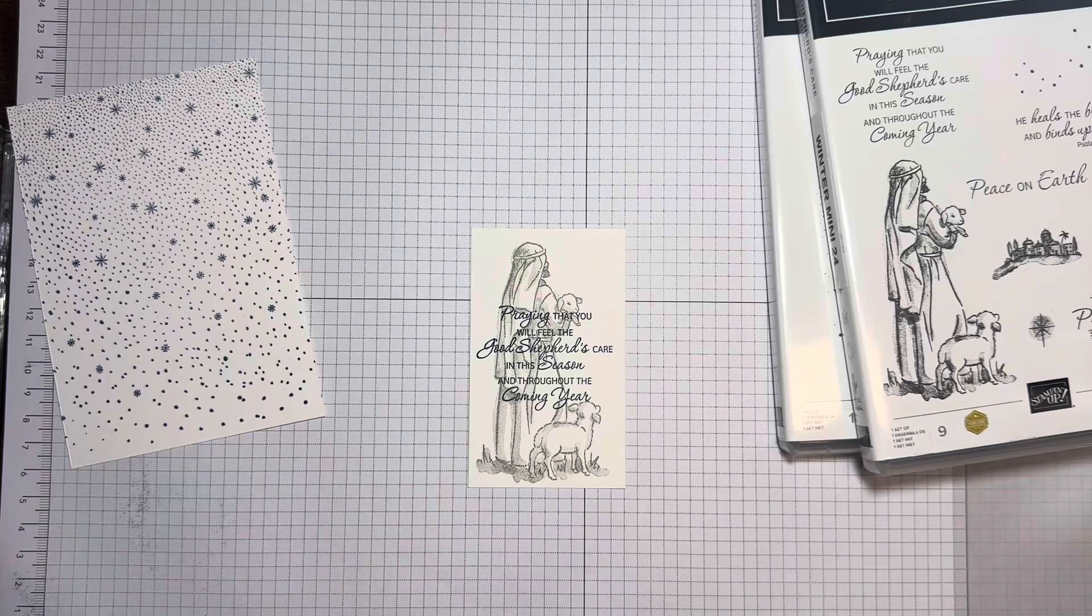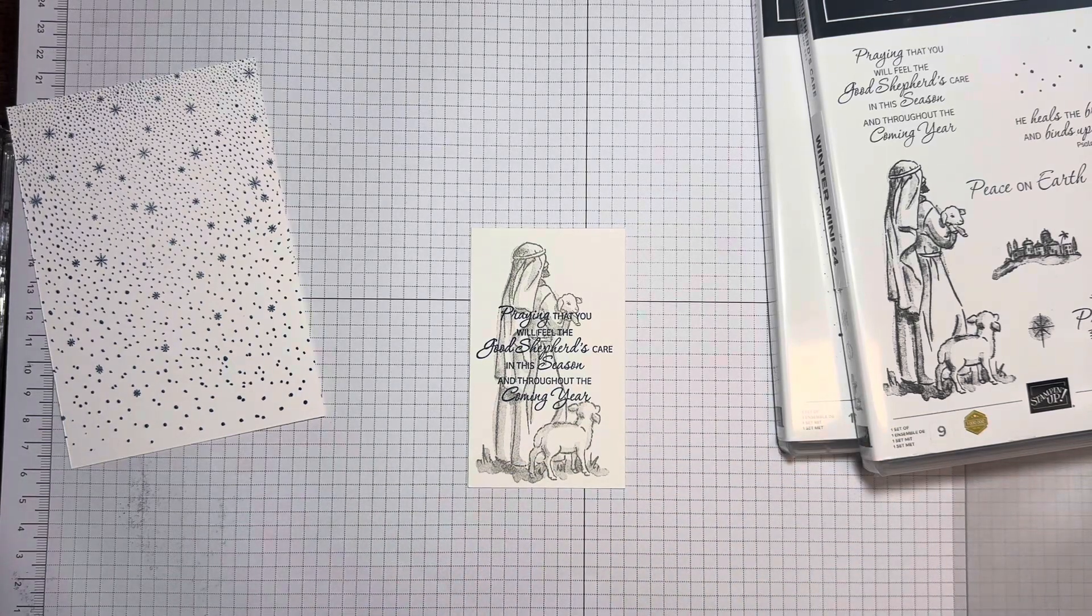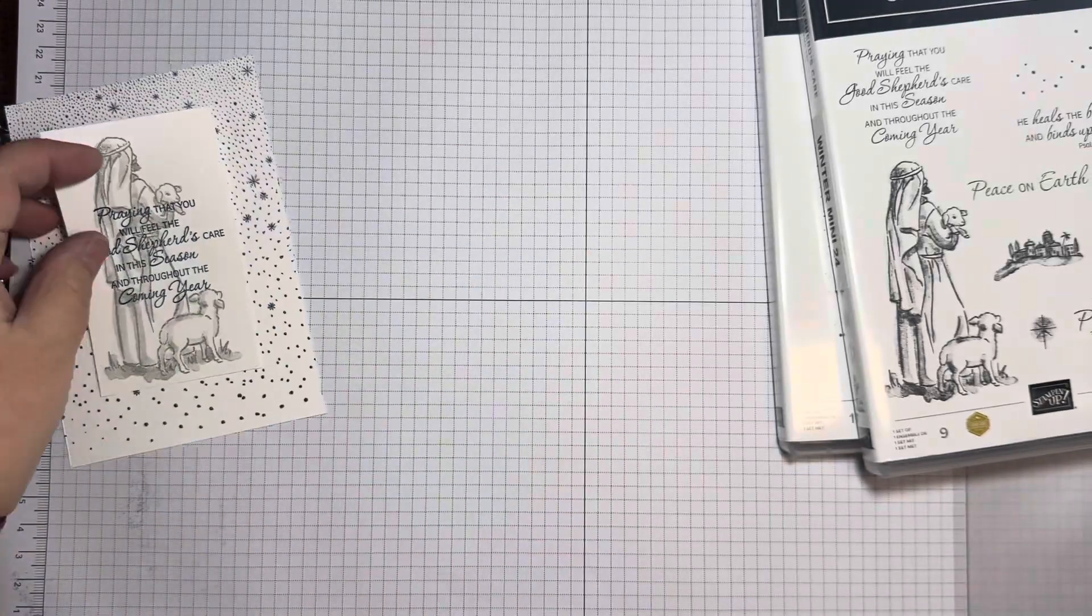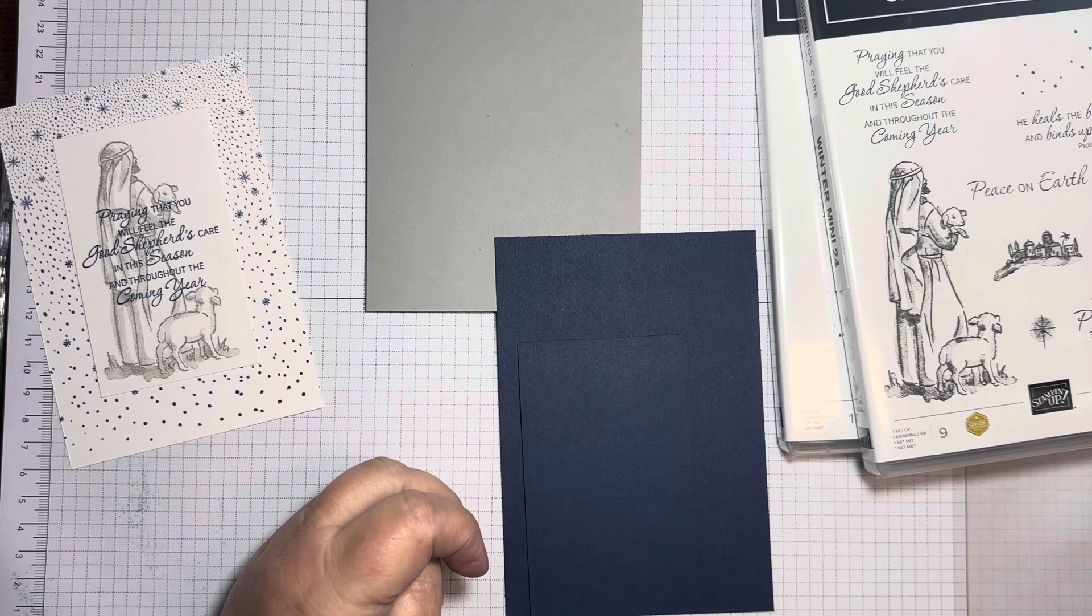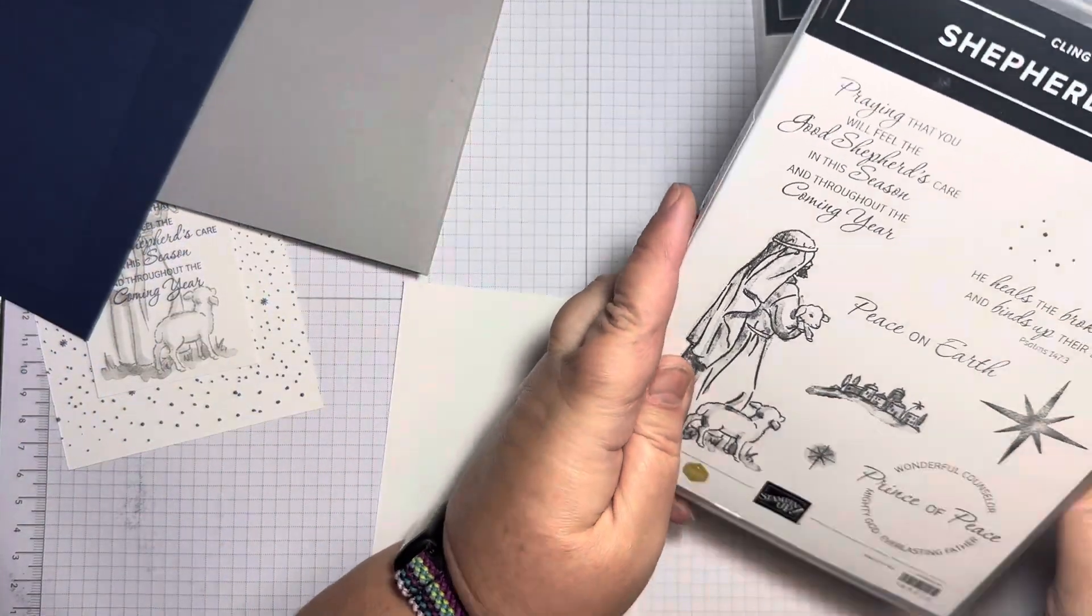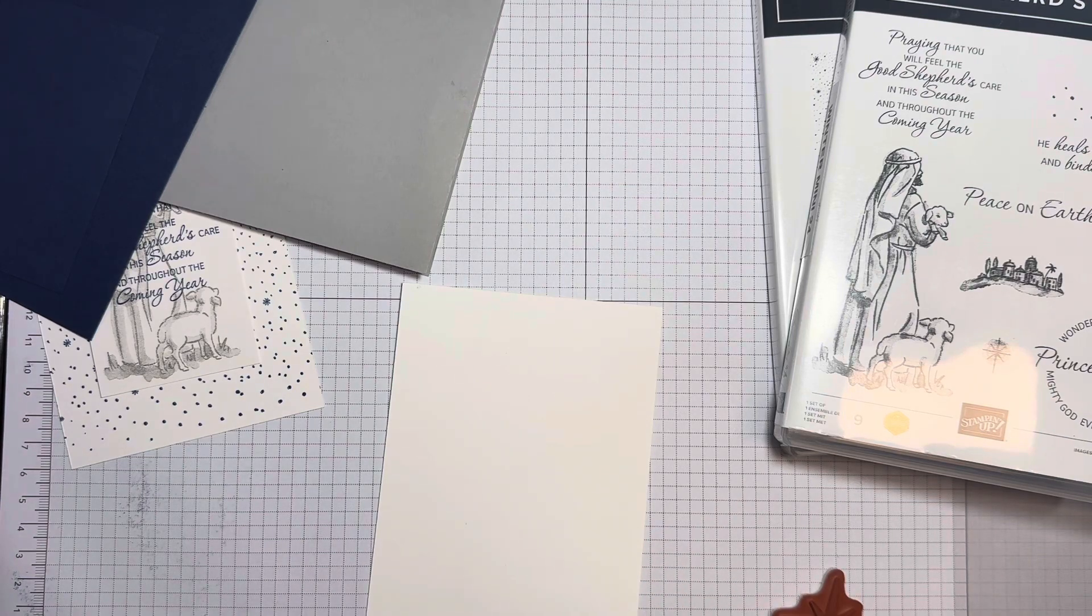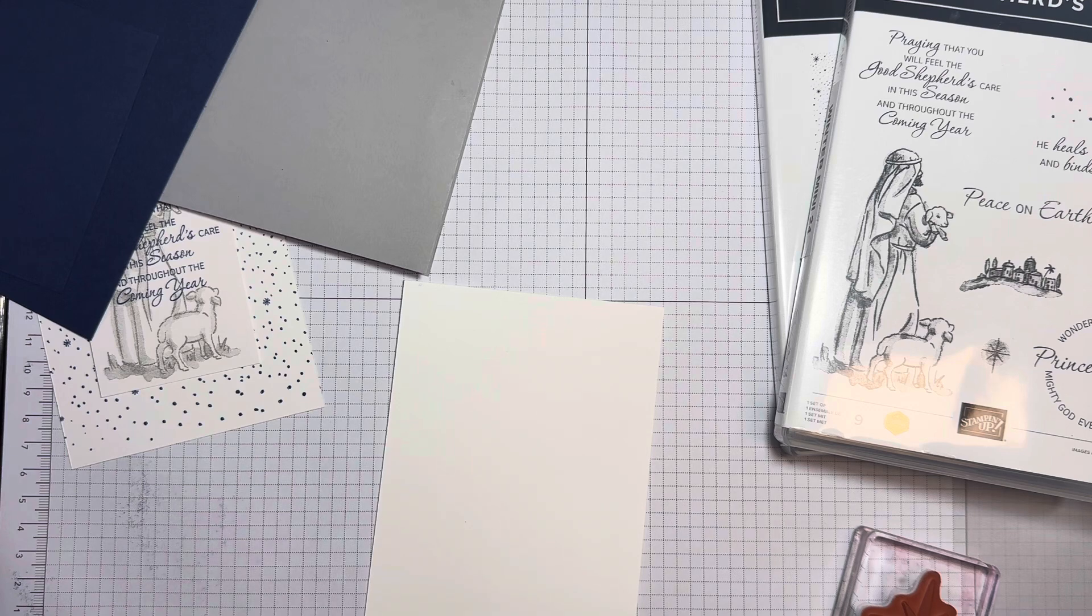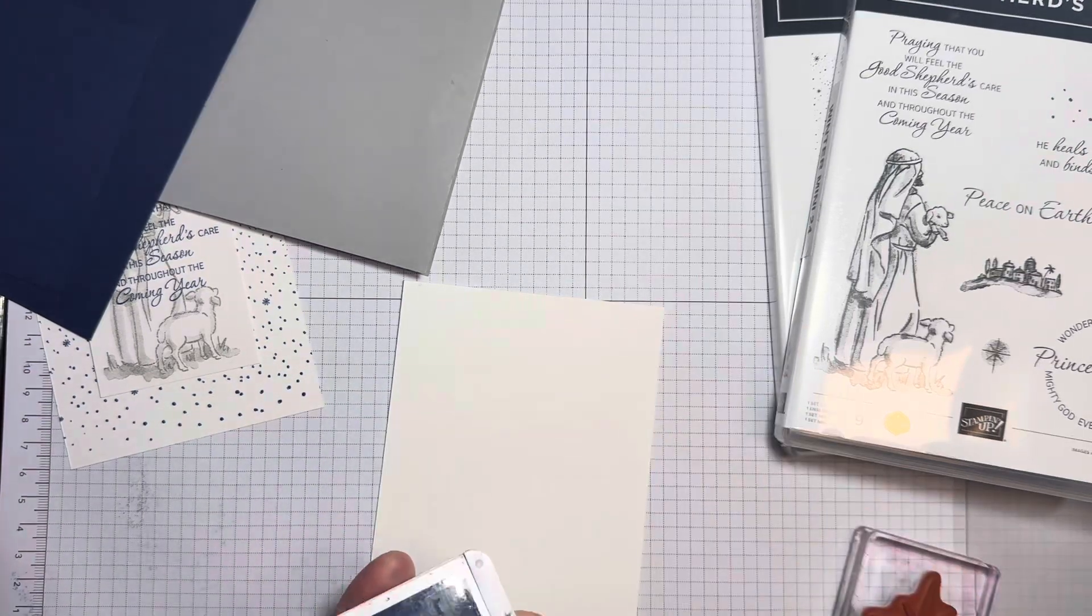Back to that. Right, here we go. Ink it up. Now my ink pad needs re-inking, so I'm kind of going around the edges to make sure whichever bits got ink. I think I must have enough. I just have to be careful I don't have a halo as well. Praying that you will feel the good shepherd's care in this season and throughout the coming year. Love. I just think that it's such a beautiful image and such a beautiful sentiment that it really doesn't need much else.